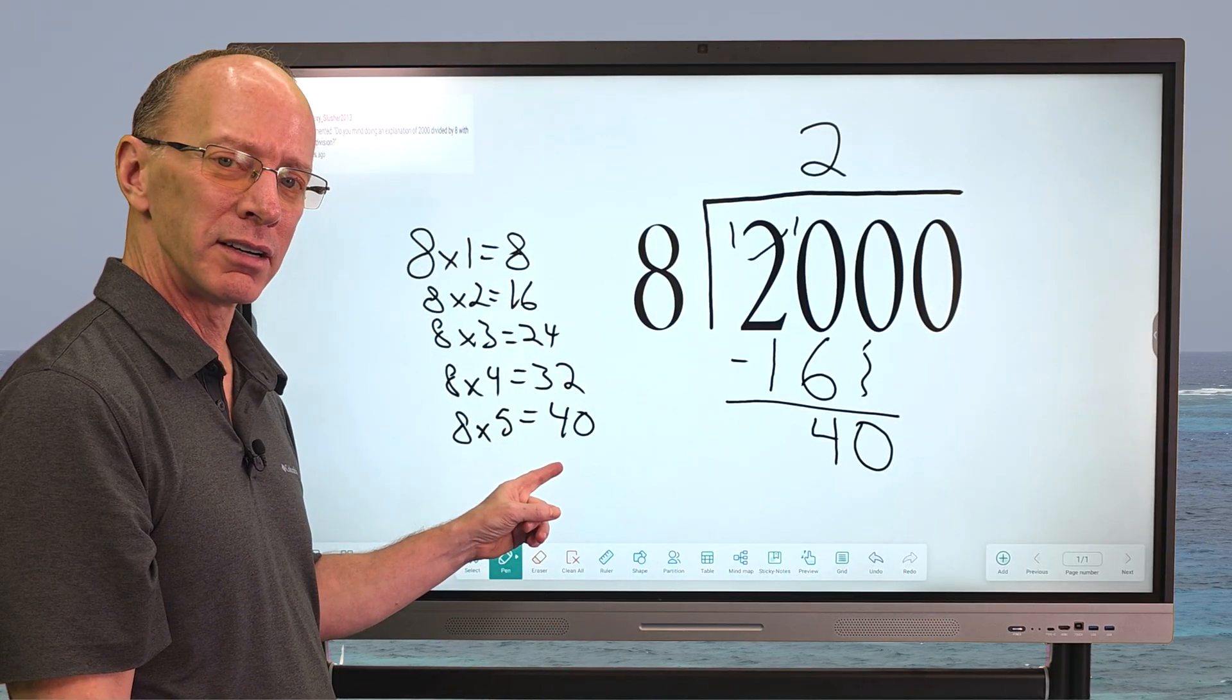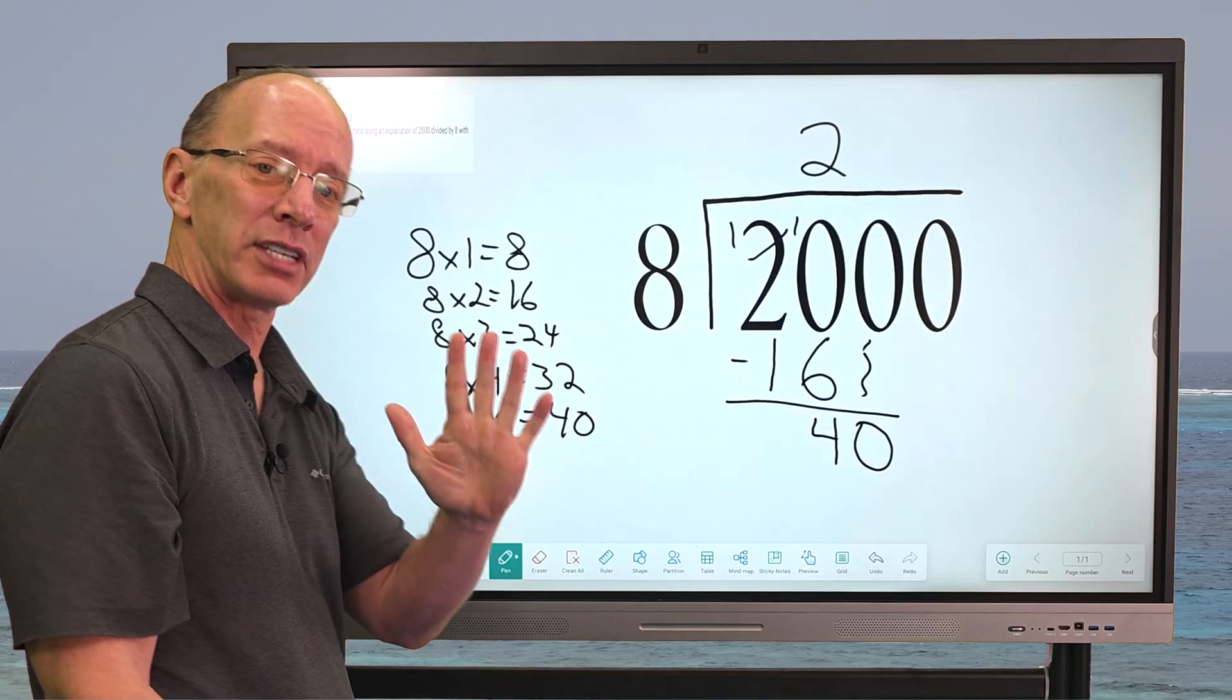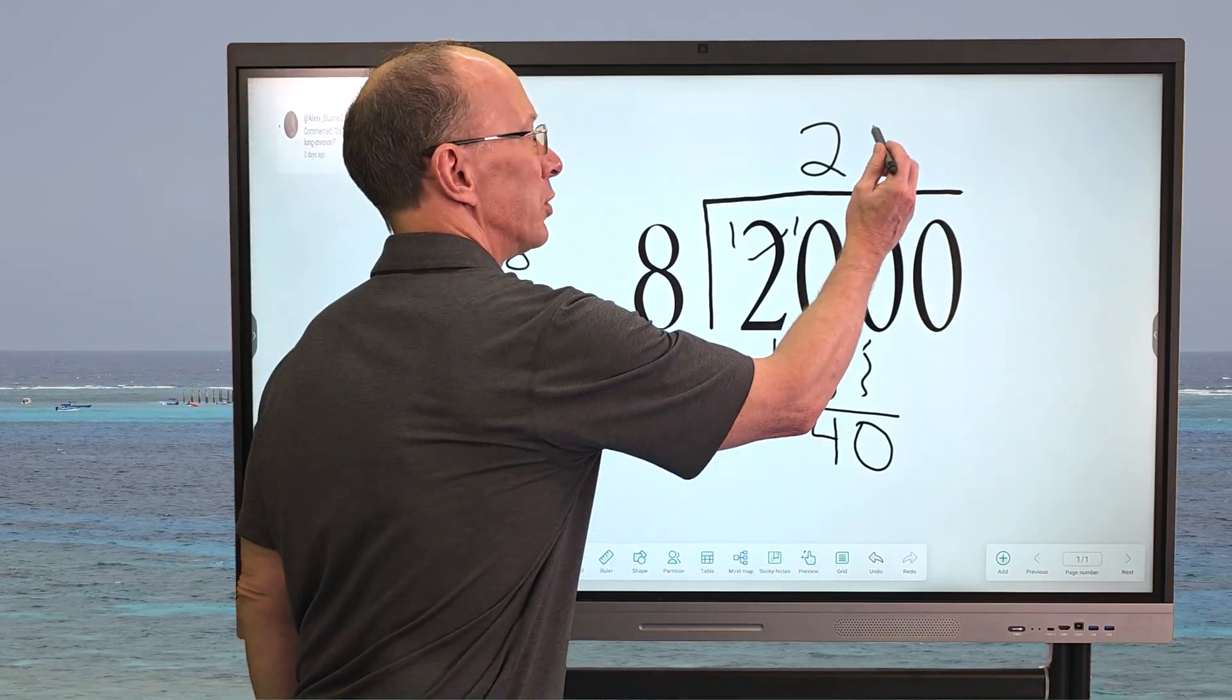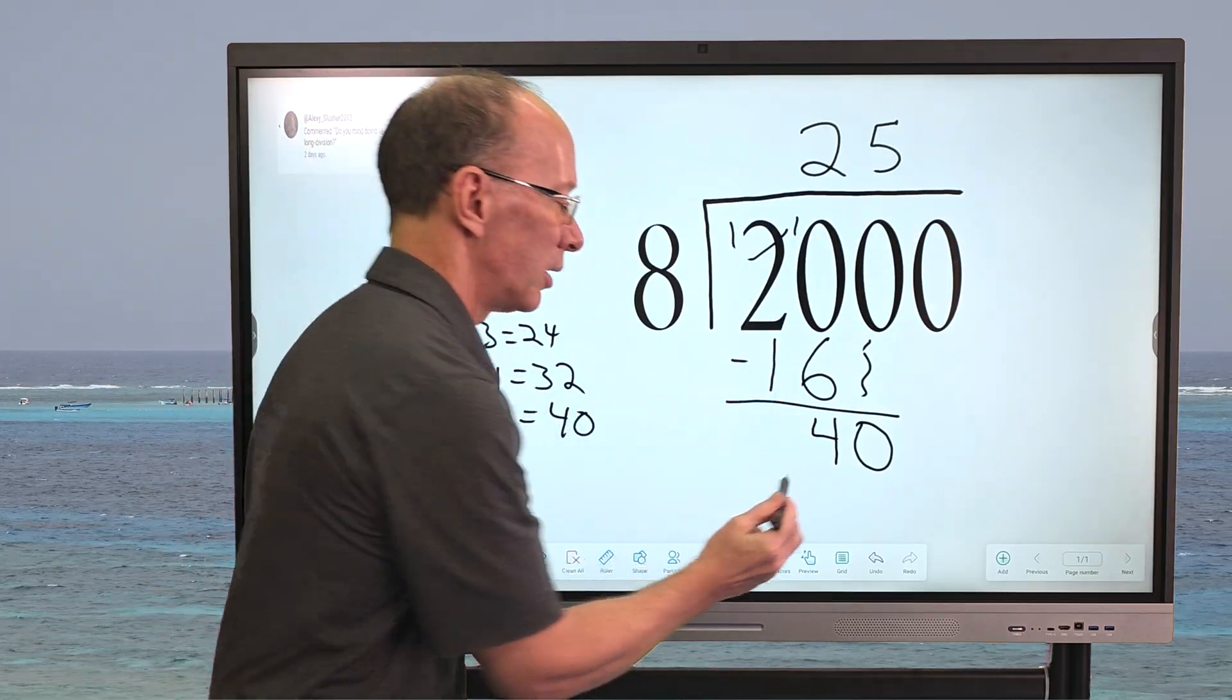Remember that 40 over here? Yeah, what number, how many times can I put 8 into 40? 5 times. So I'm going to go ahead and put the 5 right here. And then 5 times 8 equals 40.